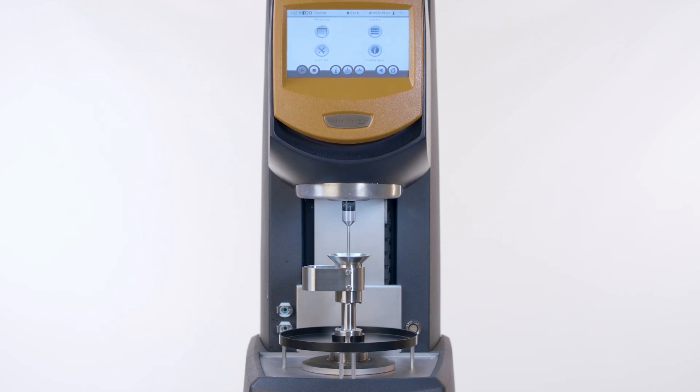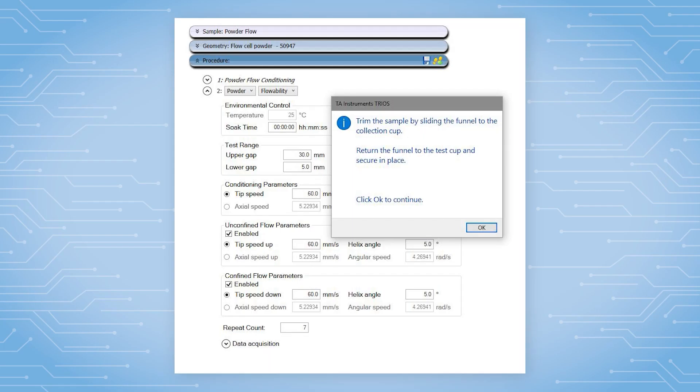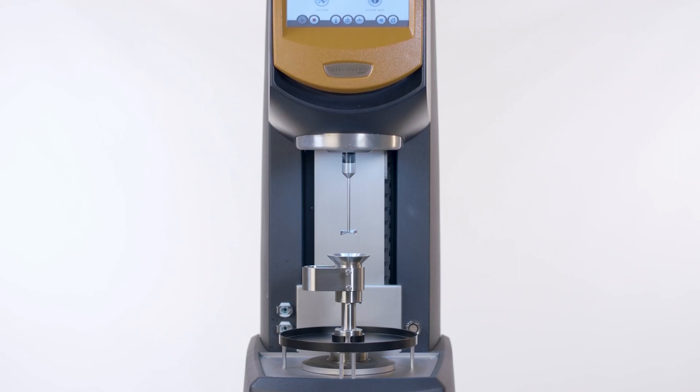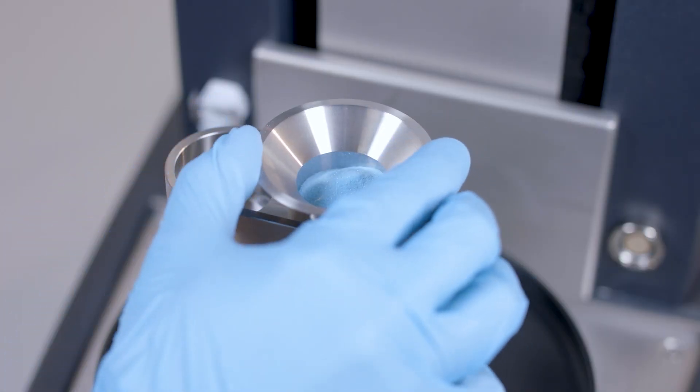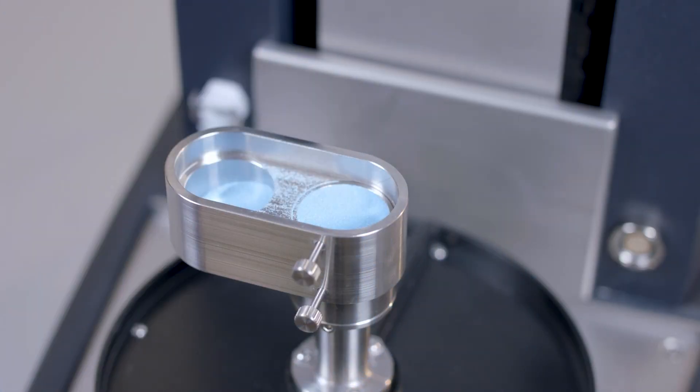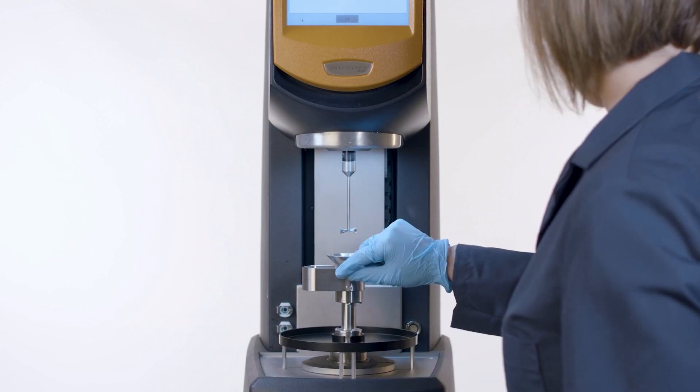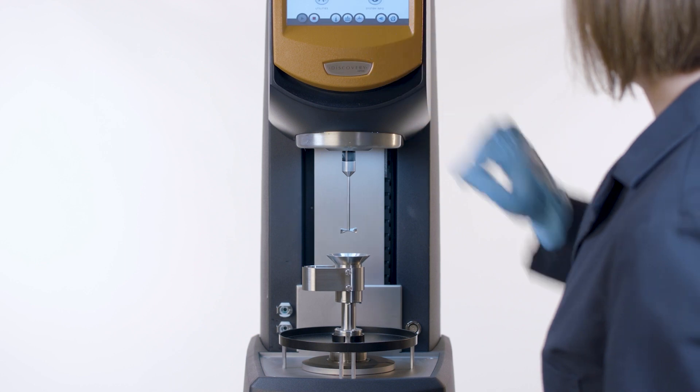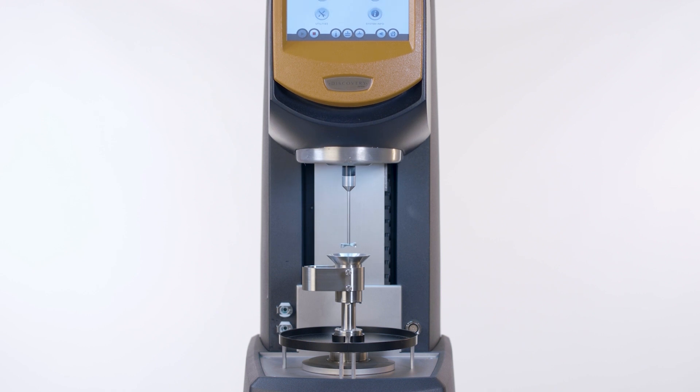After the conditioning step is complete, follow the prompt on the rheometer screen or in the TRIOS software and trim the sample. Loosen the upper set screw and slide the funnel, removing excess powder and depositing it in the collection cup. After trimming, return the funnel to the testing cup and secure it by tightening the set screw. Press OK on the touch screen or in the TRIOS software to move on to the measurement.